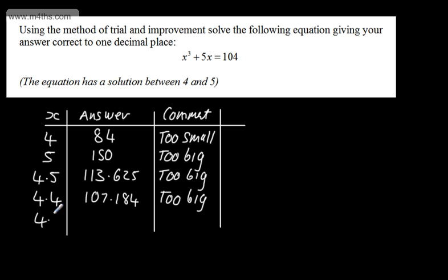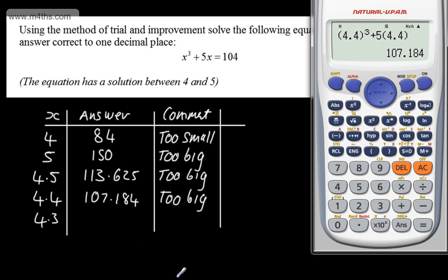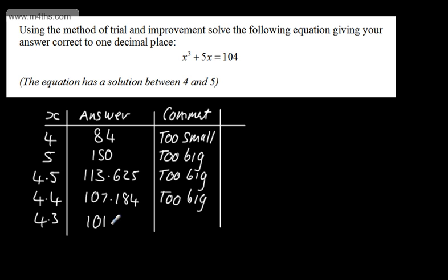The next logical step is to try 4.3. Don't try 4.3582 or something — just stick to 4.3. Switching to 4.3, we evaluate and get 101.007. This is less than 104, so I can say that this is too small. What we've done here is found that the answer is going to lie somewhere between 4.3 and 4.4.